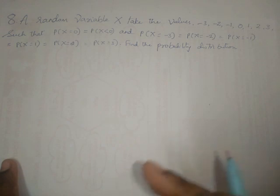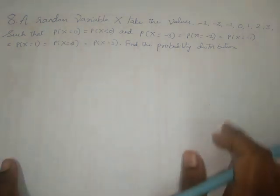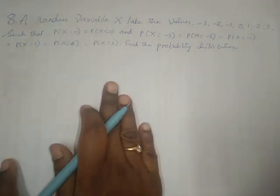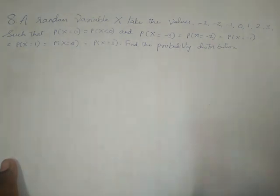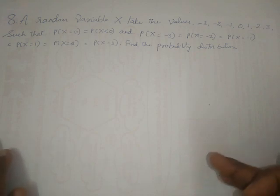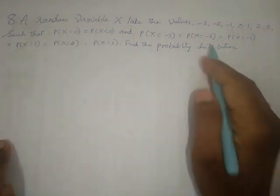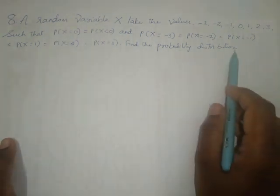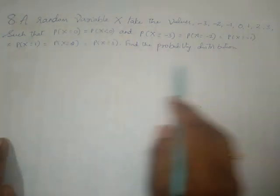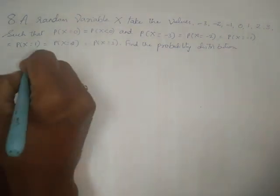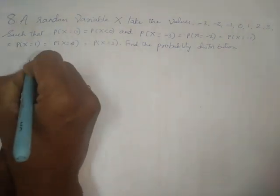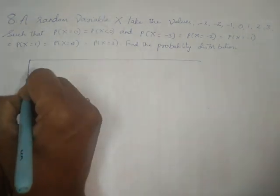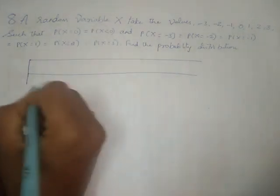In the previous problems they used to give the table and ask us to find P(X<6) or P(X≤3) or P(X≥2). Now they have given the conditions as hints and are asking us to find the probability distribution — that is, we have to form the table.